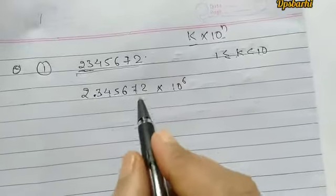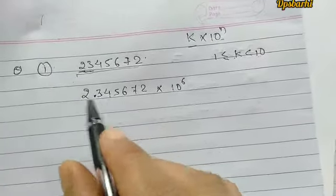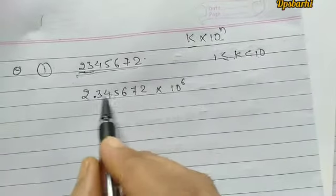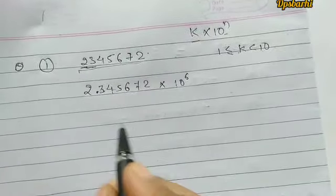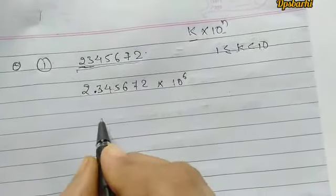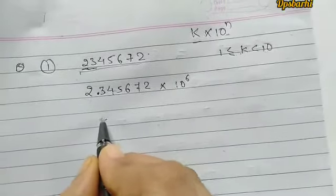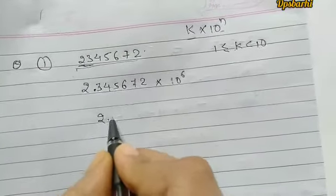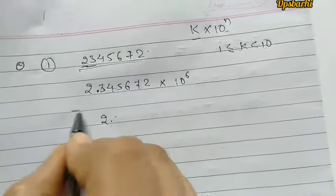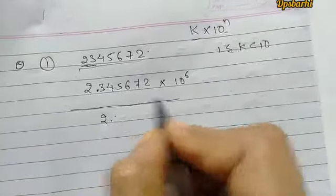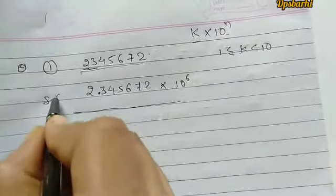If we solve this question, what happens? 2.3 — this is the standard form.